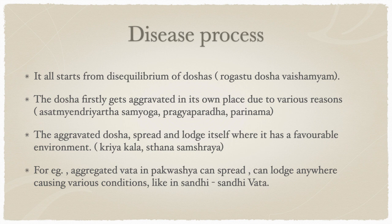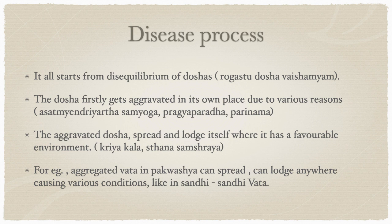Sthana samshraya means the aggravated dosha lodges itself in a certain place in the body — whichever channel shows weakness or a favorable environment. For example, vata aggravates in the pakvashaya and when it spreads all over the body it can cause pain in the neck, back, knees, or anywhere else. The pain will occur wherever there is weakness. If a person strains his neck frequently, his neck is weak, so the prakopa-prasara vata will lodge there and cause neck pain.